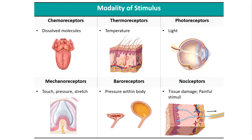Baroreceptors detect pressure changes in body structures — think about barometers. An example would be receptors found in the connective tissue in the walls of the bladder; when pressure gets high enough, that triggers your nervous system to signal that you need to expel waste. Nociceptors are interesting ones because these actually detect tissue damage and pain. Pain is there for a reason — it's meant to signal that we are coming into contact with something noxious, toxic, or damaging.